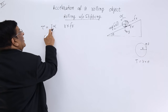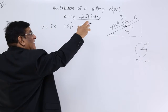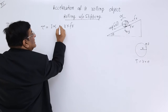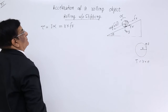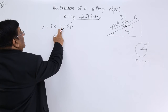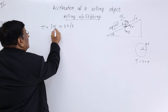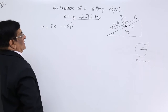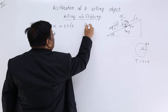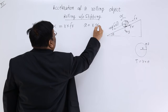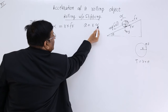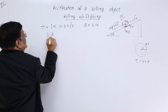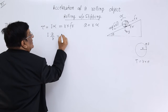Another formula for torque is I into alpha, since the body is rotationally accelerating. Since both expressions represent the same torque, we set them equal: I into alpha equals R into friction. Since linear acceleration A equals R into angular acceleration alpha, we get alpha equals A upon R. So we can write I into A upon R equals R into friction.